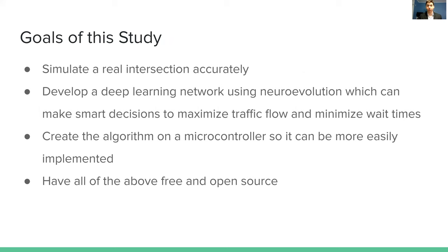The goals of this study are: to simulate a real intersection accurately; to develop deep learning networks using neural evolution that can optimize the intersection to maximize traffic flow and minimize wait times; to create this on a microcontroller such as the Raspberry Pi for easy implementation; and to make it all free and open source for ease of use and modification.